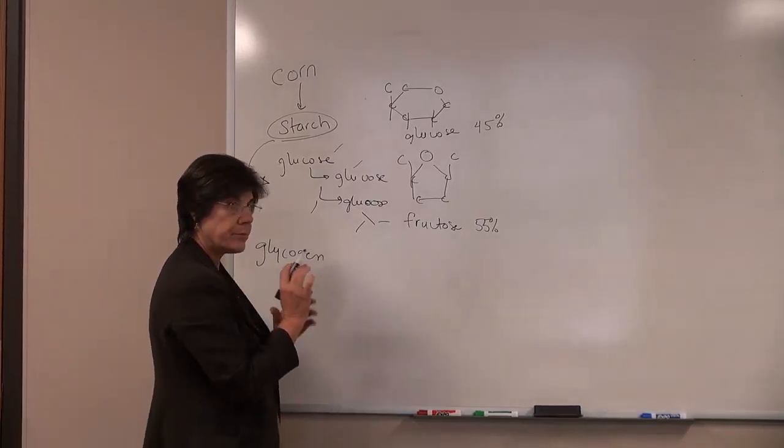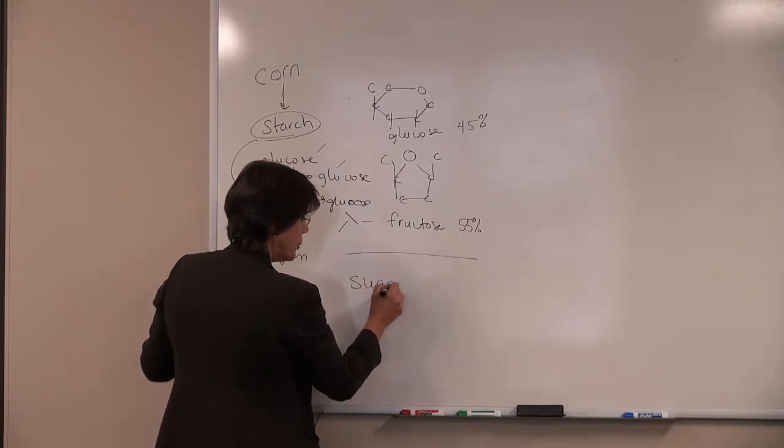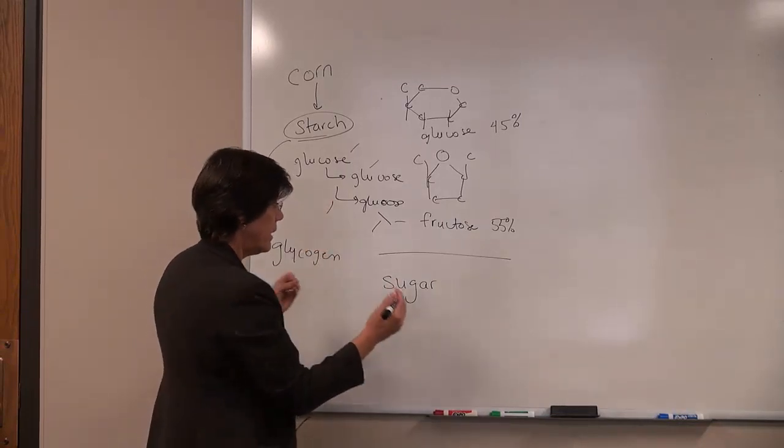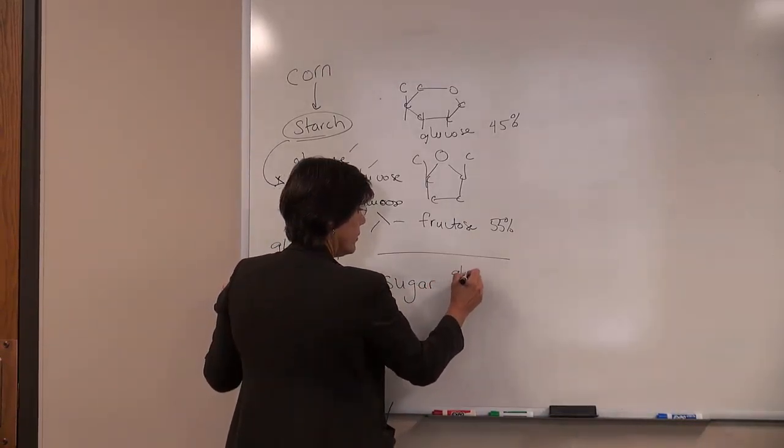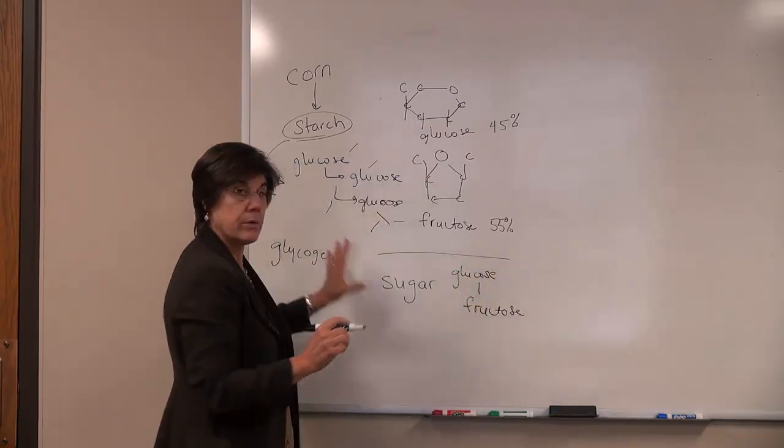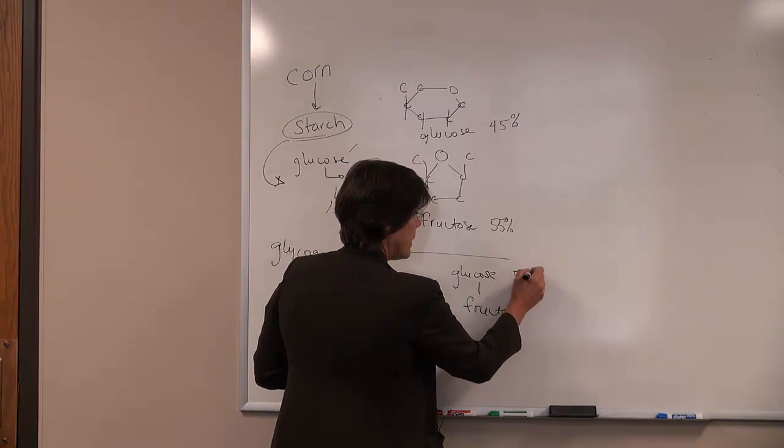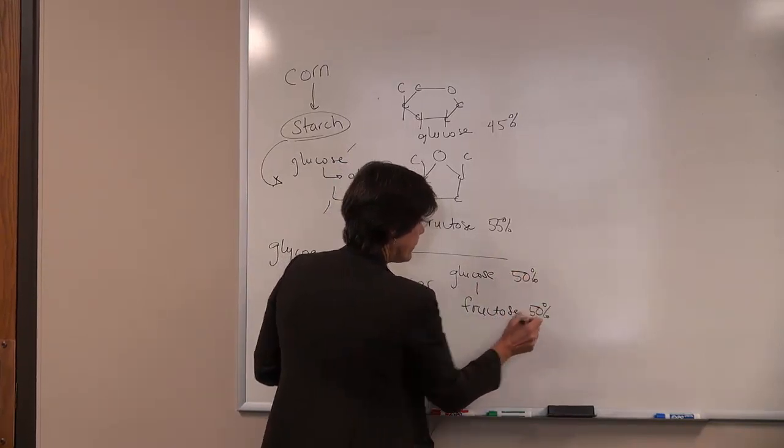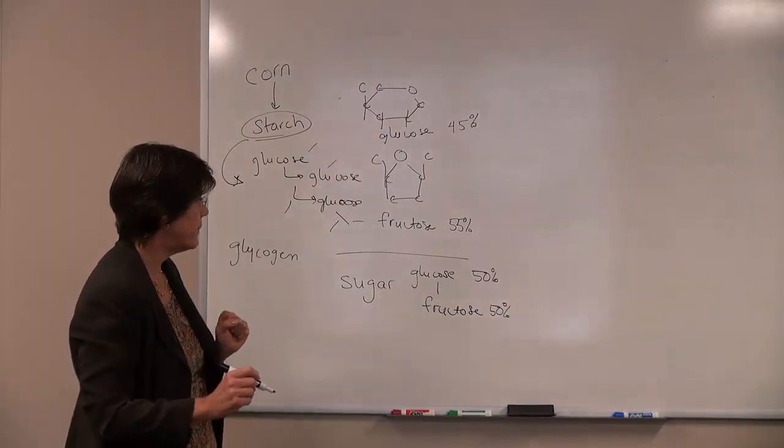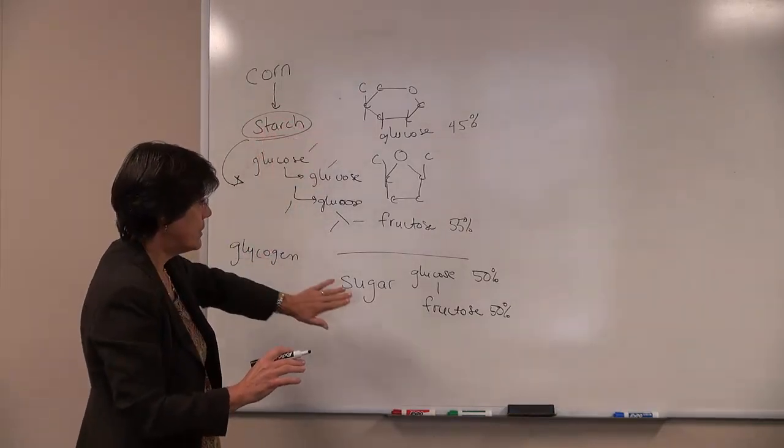The similar structure is found in what we call table sugar. Table sugar is a mixture of glucose and fructose linked together by a bond. So glucose linked together with fructose equals sugar. The amount of glucose and fructose in sugar is about 50 percent to 50 percent. So very similar to the ratio of the amount of glucose and fructose that's in high fructose corn syrup. So there isn't a lot of difference structurally between high fructose corn syrup and table sugar.